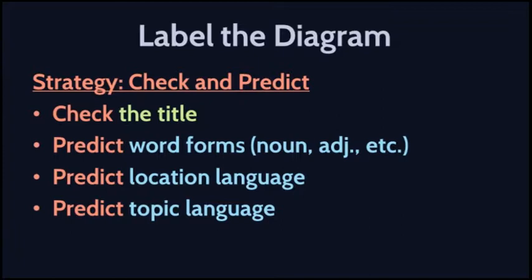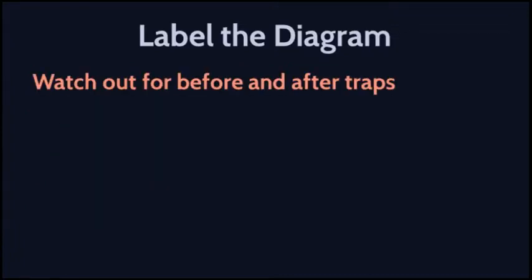And we also want to predict the topic language. So depending on the topic, there might be certain words that you can limit yourself to. For example, if you're doing a map of a campus, you might have words like the law building, the student center, those kind of words.